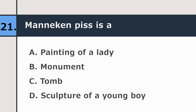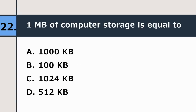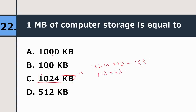Twenty-first question: a mannequin piece is a painting of a lady, monument, tomb, or sculpture of a young boy? Twenty-second question: one MB of computer storage is equal to 1000 KB, 100 KB, 1024 KB, or 512 KB? The correct answer is 1024 KB. Similarly, 1024 MB equals 1 GB, and 1024 GB equals 1 TB.